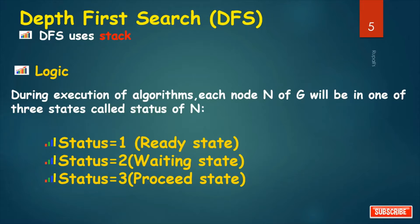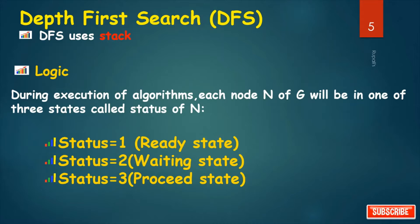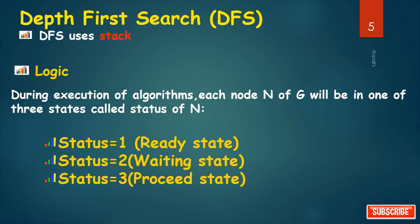DFS uses a stack. During execution of this algorithm, each node N of graph G will be in one of three states called the status of N. First, status 1, that is ready state. Second, status 2, that is waiting state. And third, status 3, that is proceed state.